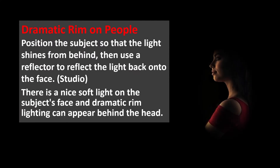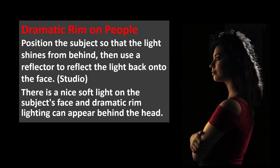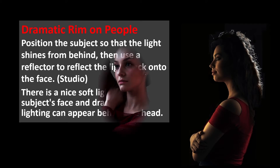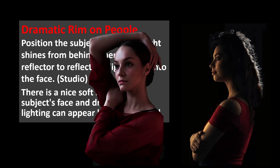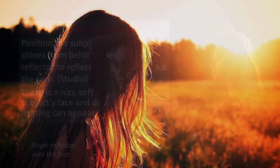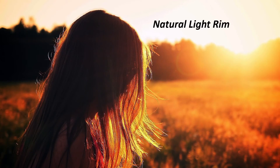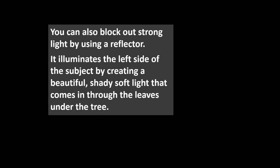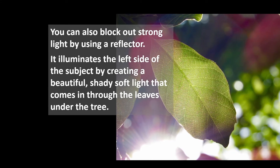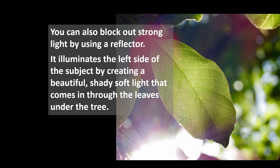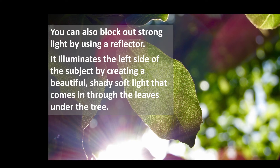Position the subject so that the light shines from behind, then use a reflector to reflect the light back onto the face. This creates a nice soft light on the subject's face, and dramatic rim lighting can appear behind the head. Third, you can also block strong light by using a reflector to create a beautiful, shady soft light that comes through the leaves under a tree to illuminate the subject.